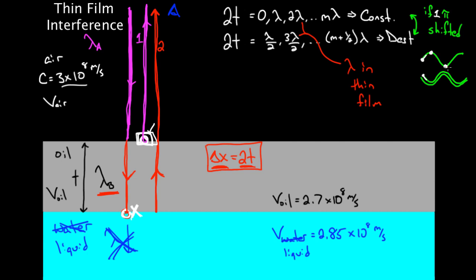We want to know how much further along the first reflected light ray was when the second one emerges. Because if the second ray also emerges exactly at that same point, they'll be constructive. But if it emerges half a cycle off — 180 degrees out of phase — then it'll be destructive. We want to know how much this cycle got progressed by the wave traveling through the thin film, so we need the wavelength in there. That's the wavelength that actually matters — wavelength in the thin film.